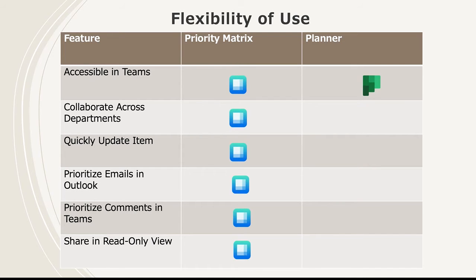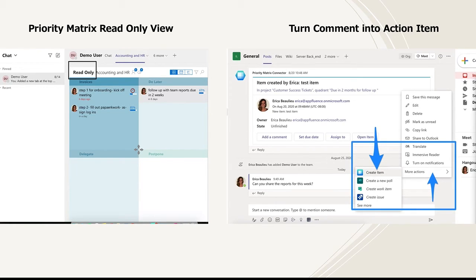Last but not least, let's look at the overall flexibility of Priority Matrix and Planner. Priority Matrix and Planner can both be used within Microsoft Teams. One of the biggest differences between these two applications is how you can collaborate across departments or with external stakeholders. Priority Matrix supports across department collaboration or collaboration with any Priority Matrix users, regardless of them being on your Office 365 license or not. On the other hand, Planner limits users to only collaborating with teammates on their same Office license, so business-wide visibility can be more difficult. If you're an executive in the company, Priority Matrix will give you the freedom to collaborate with anybody across the company. If you find yourself needing a way to share project timelines with external collaborators or contractors, the Priority Matrix read-only sharing option will be perfect for your team.